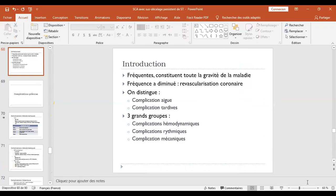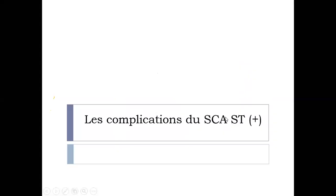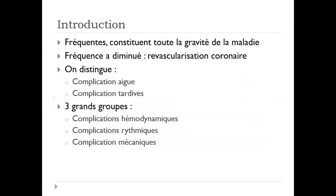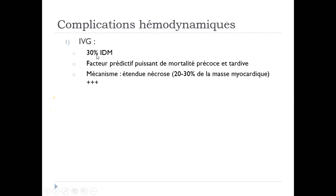On va passer au dernier chapitre de ce syndrome coronarien aigu ST+, qui est très important aussi : les complications du syndrome coronarien aigu ST+. Elles sont fréquentes, constituent toute la gravité de la maladie. La fréquence a diminué grâce à la revascularisation coronaire. On distingue des complications aiguës et des complications tardives. Trois grands groupes : des complications hémodynamiques, des complications rythmiques et des complications mécaniques.